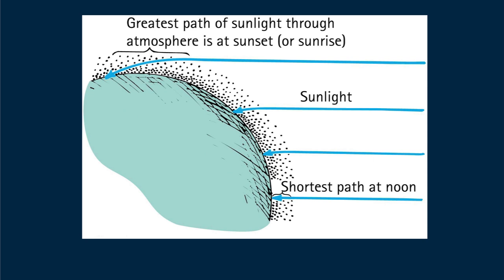Red, which is scattered the least and is therefore transmitted the most, is what you see when you look at the sun through the thickest stretch of air. So the thicker the atmosphere through which a beam of sunlight travels, the more high frequency light gets scattered out of the beam.